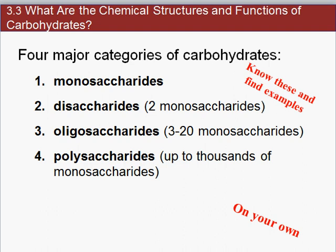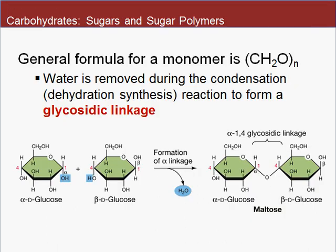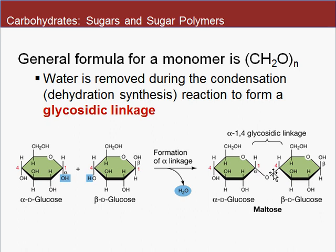Here we see glucose, a six-carbon sugar — that's a monosaccharide, the building block for larger sugars. Glucose is a simple sugar. If we join two glucose units together, we create a disaccharide called maltose. When they link together, they're joined by a covalent bond — you can see the solid line between them. It's a strong bond, and more specifically for carbohydrates it's called a glycosidic linkage.